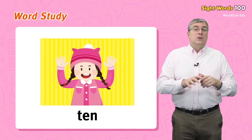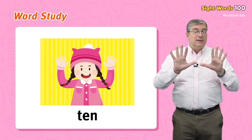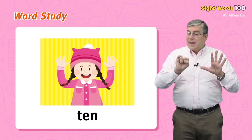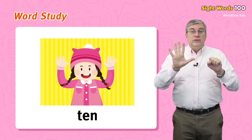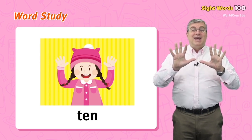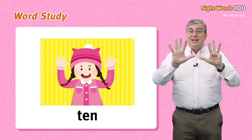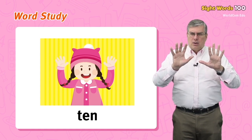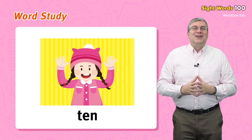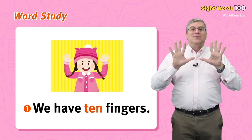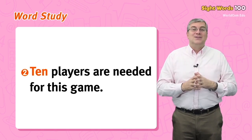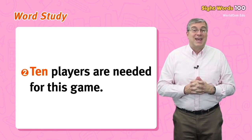Finally we have ten. Ten is a number. When you count, you use all the fingers on your hands. It is more than nine and less than eleven. For example, we have ten fingers, or ten players are needed for this game.